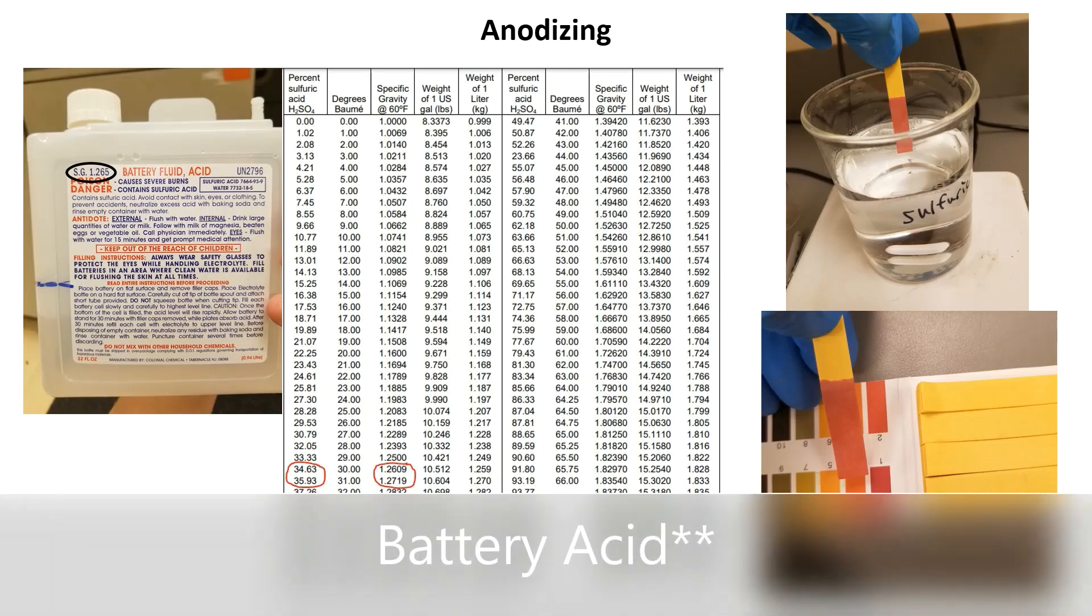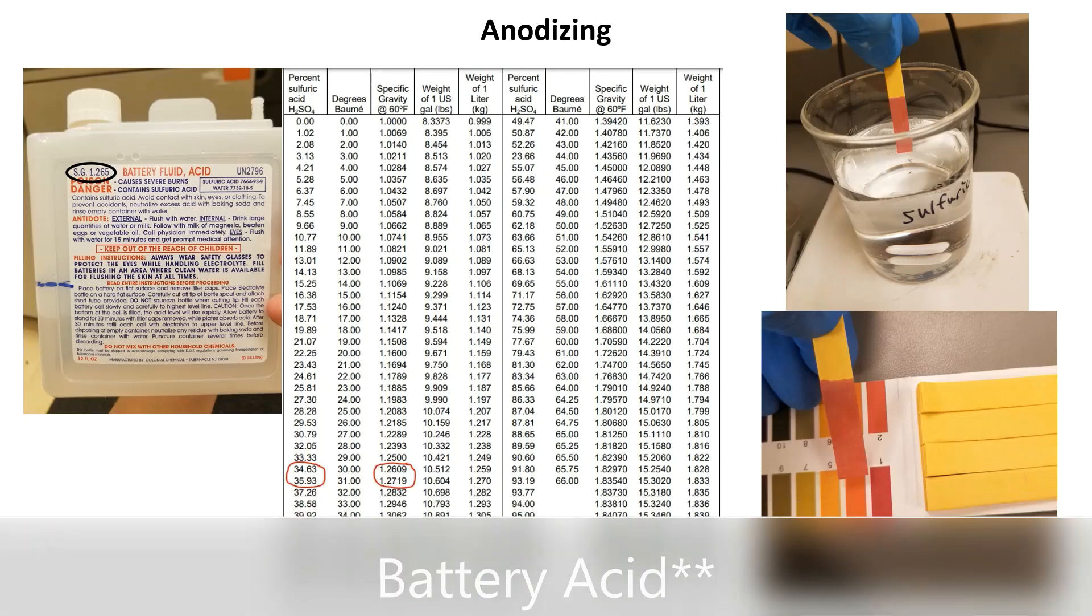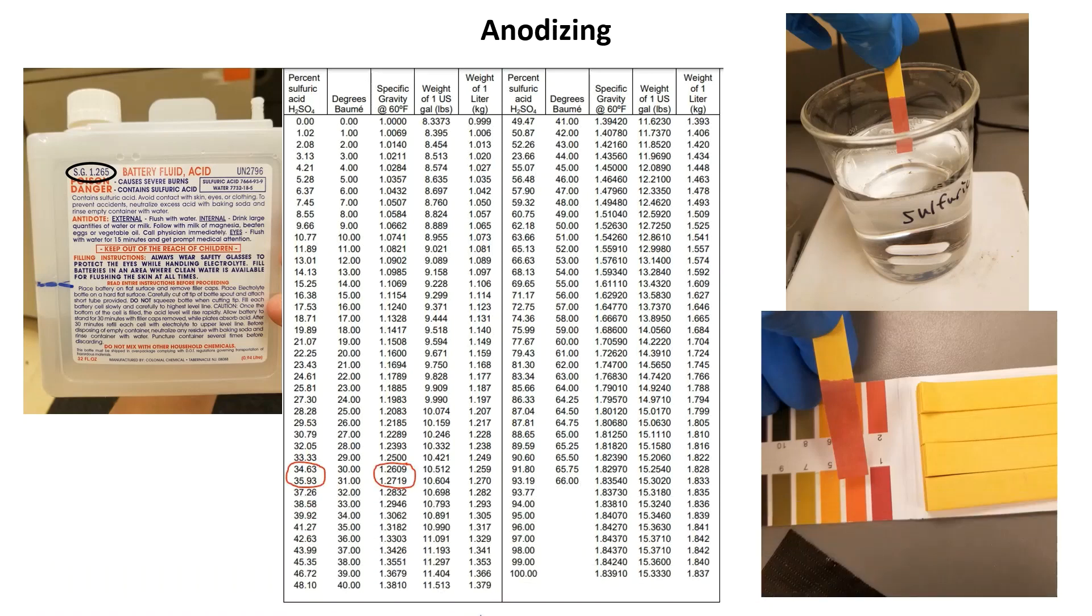So the battery acid I got had a specific gravity of 1.265 - you can see it circled in black on the container there. I looked up this value in a chart that relates the specific gravity of the solution to the percent sulfuric acid by weight. I have circled the values in red and you can see this specific gravity corresponds to about 35% sulfuric acid solution by weight. So to get to the needed 10 to 15 percent by weight I diluted the solution 3 to 1 in DI water, then I checked the pH to see if I was in the right range.